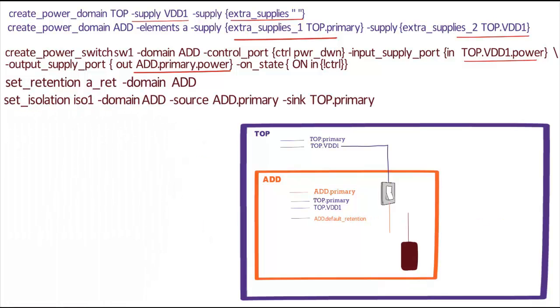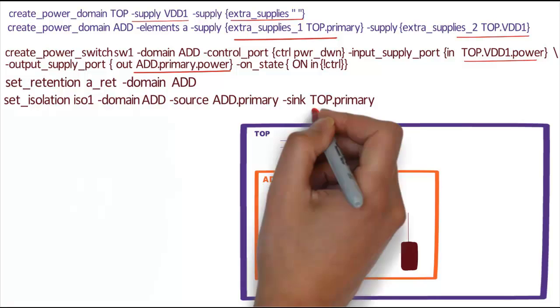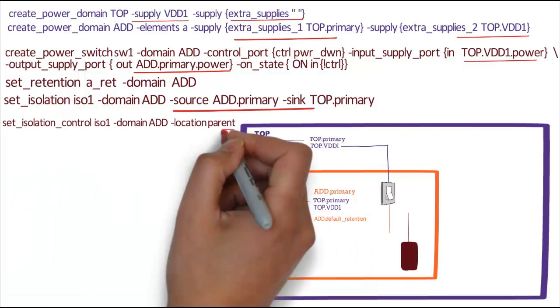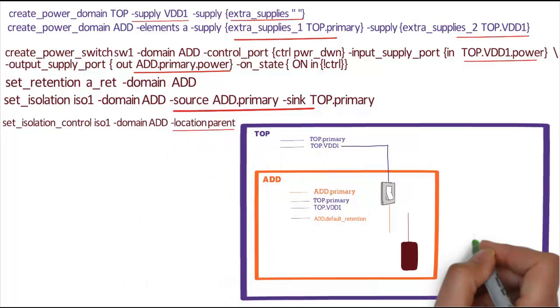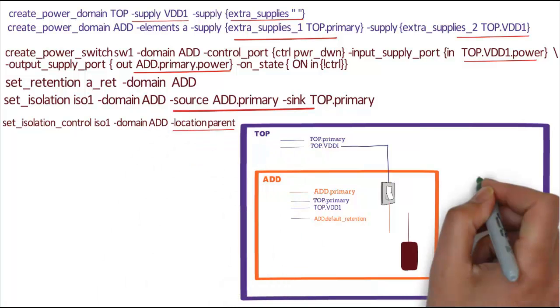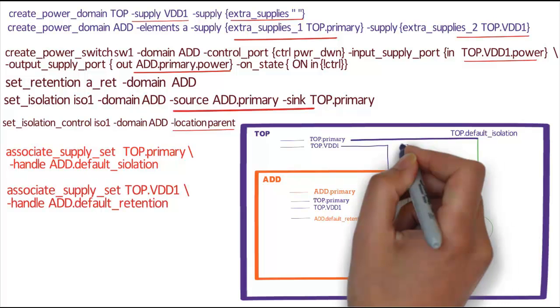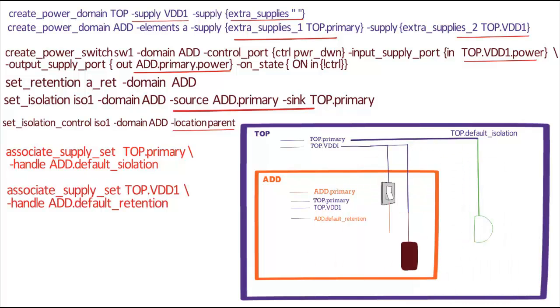The Isolation Strategy is defined with Source as Add.Primary and Sync as Top.Primary with Location Parent. So the Isolation Cell will be placed in Top and associated to Top.Default Isolation. Now, we associate Top.Default Isolation to Top.Primary and then we associate Top.VDD1 to Add.Default Retention.